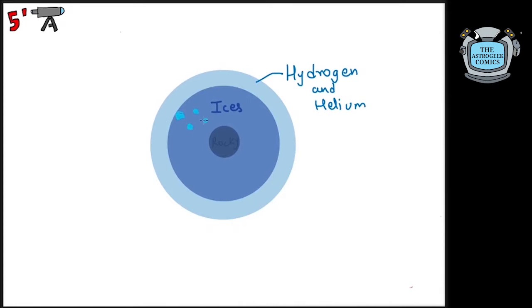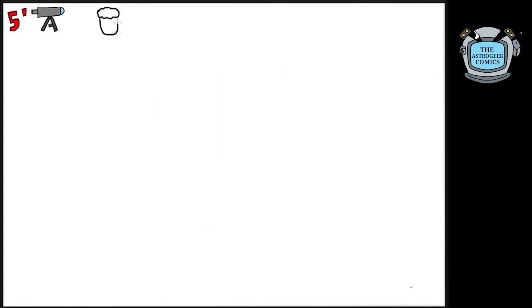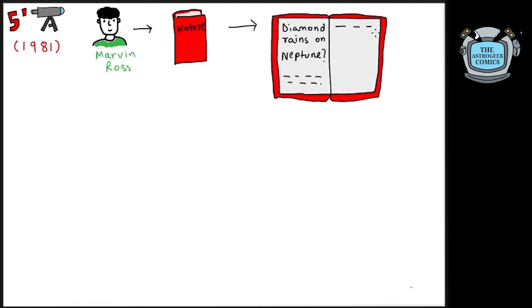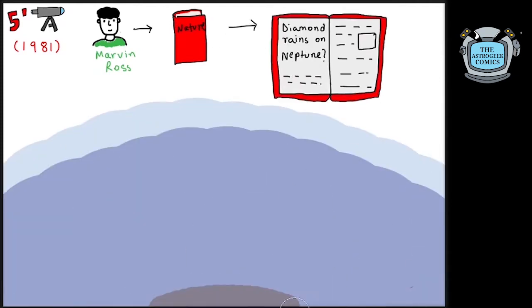How did we derive that these would result in a diamond rain on these planets? Well, in 1981, Marvin Ross wrote a paper in Nature that hypothesized exactly this. According to him, as we would go deeper into the atmosphere of ice giants, the pressure and temperature would keep increasing due to gravity.